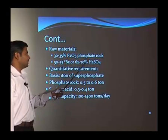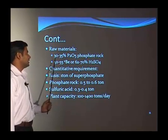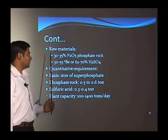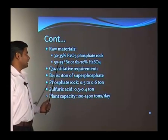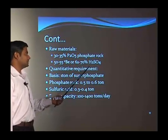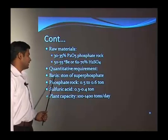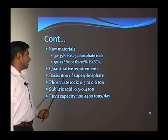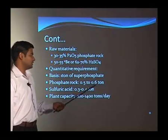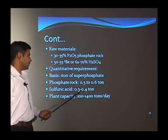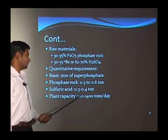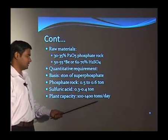The raw materials required are phosphate rock with 30 to 35 percent phosphorous pentoxide and sulfuric acid at 50 to 55 Baumé, or 62 to 70 percent. For producing 1 ton of superphosphate, we require 0.5 to 0.6 tons of rock and 0.3 to 0.4 tons of sulfuric acid. The plant capacity will vary from 100 to 1400 tons a day.